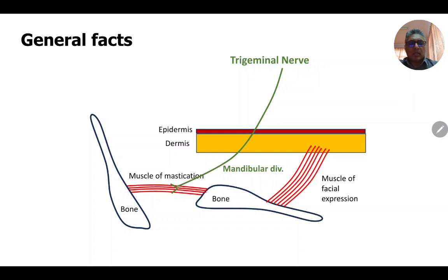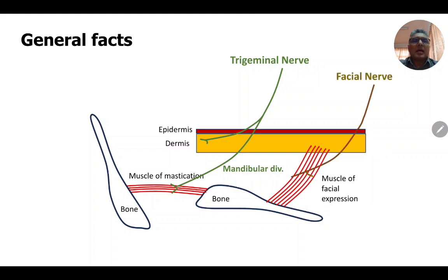The mandibular division of the trigeminal nerve not only supplies the muscles of mastication, it also contributes to supplying the dermis of the skin of the face. The other divisions of the trigeminal nerve also contribute to supplying the skin of the face. In other words, all three divisions of the trigeminal nerve supply the skin of the face, but only the mandibular division supplies muscles of mastication. Muscles of facial expression are supplied by the facial nerve, the second arch nerve.